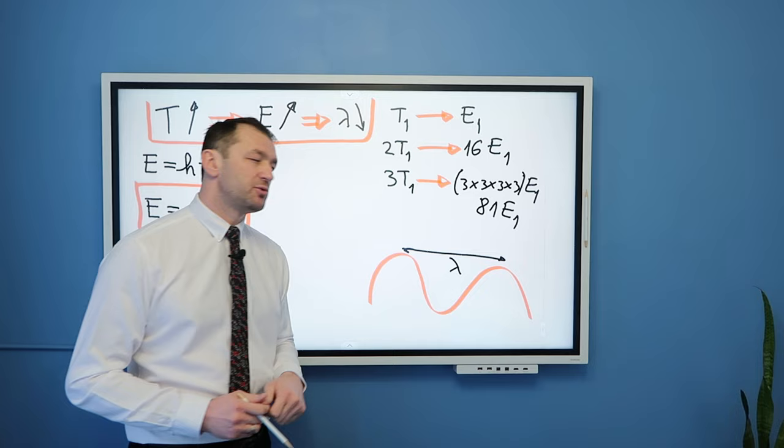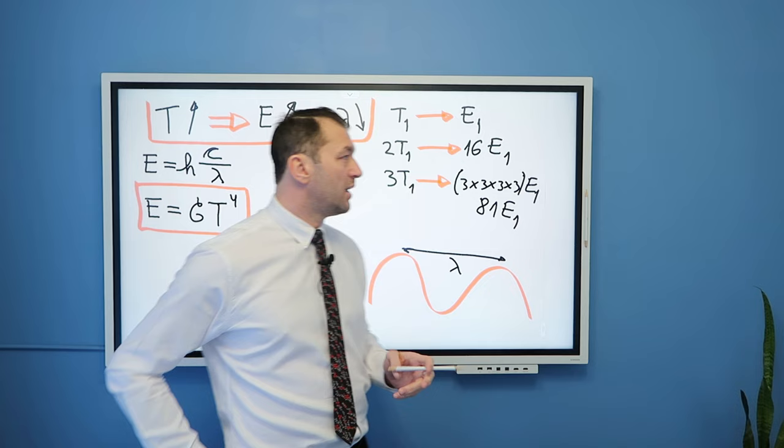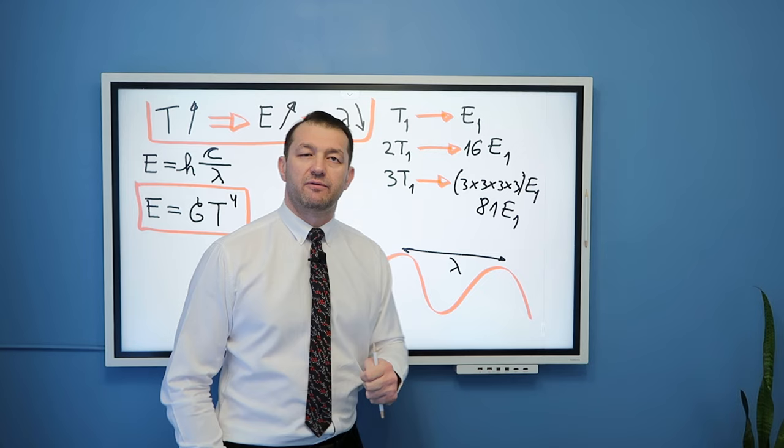By the way, the value of this constant, if you want to know, is 5.67 times 10 to negative 8 watts per square meter per kelvin to power 4, but you can find that online if you want.